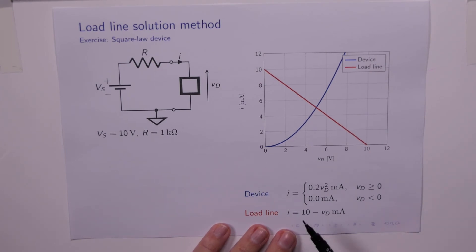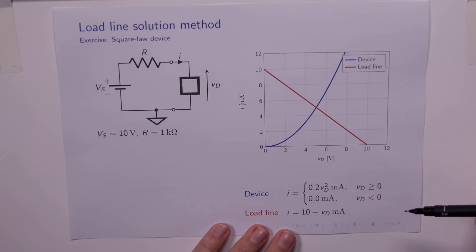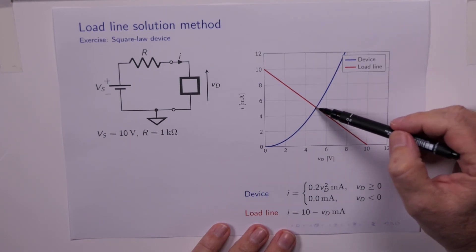The load line, we figure it out again based on Vs and R. Put that in. And if we equate these two equations, then we only end up with a quadratic, which of course we can solve, and figure out the operating point here.